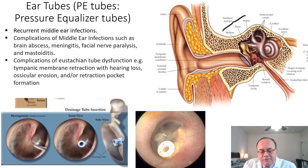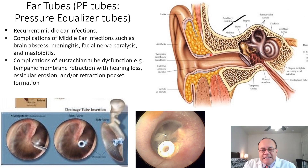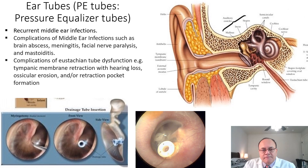Importantly, a cholesteatoma is a sac of epidermis — skin of the tympanic membrane — growing inside the middle ear and eating away the bones of the middle ear. We will discuss cholesteatomas in more detail later.